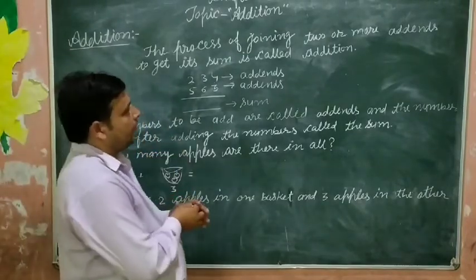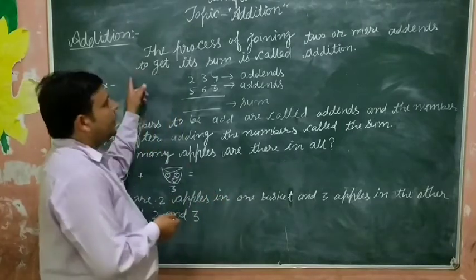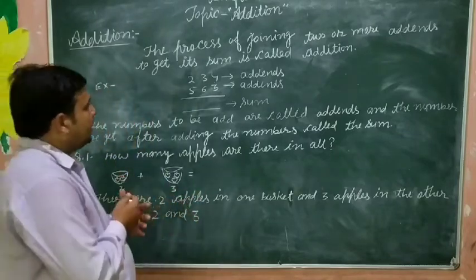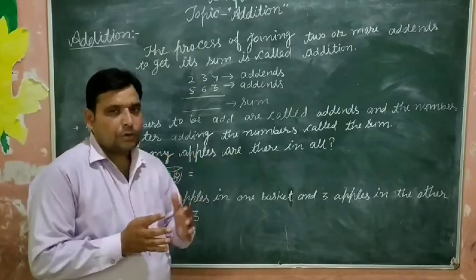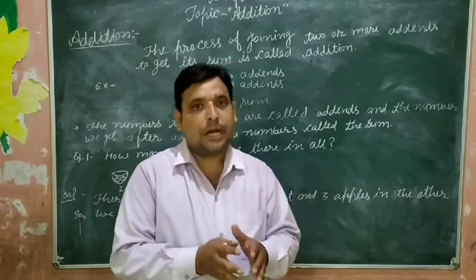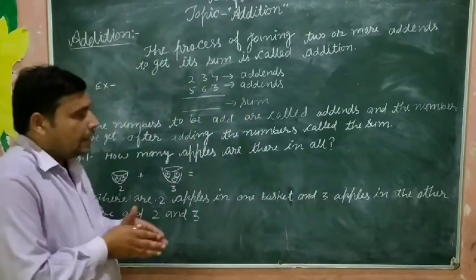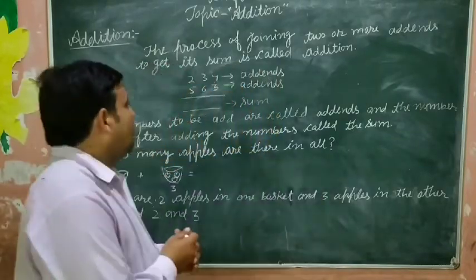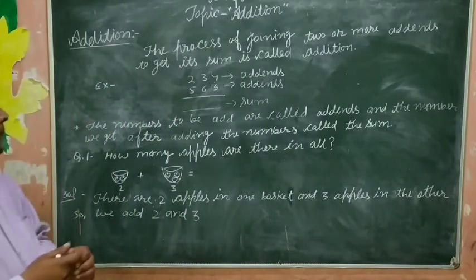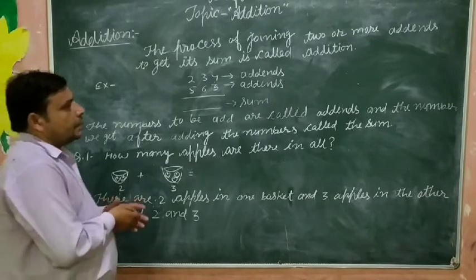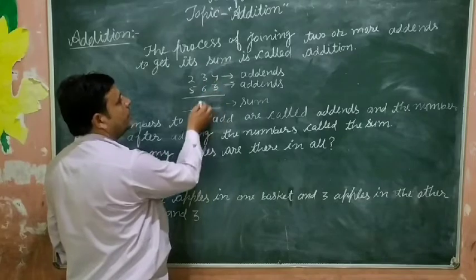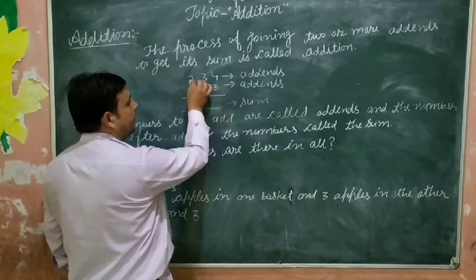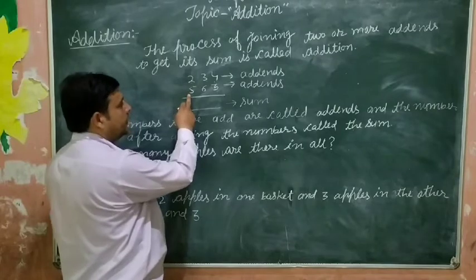The process of joining two or more numbers to get their sum is called Addition. For example, the first number is 234 and the second number is 563. These are called the first addend and the second addend.